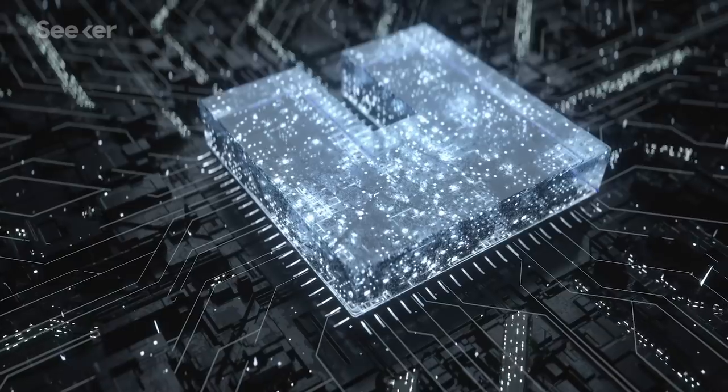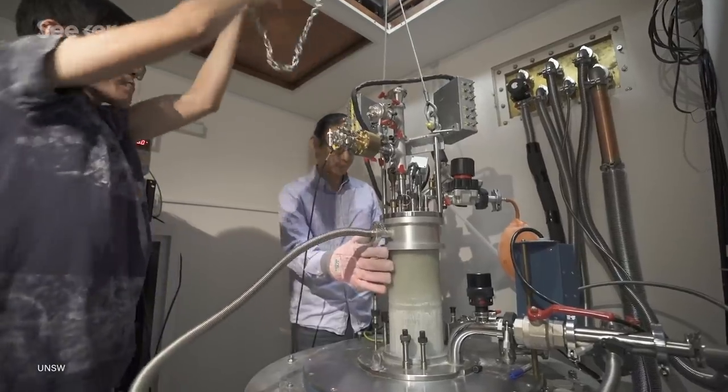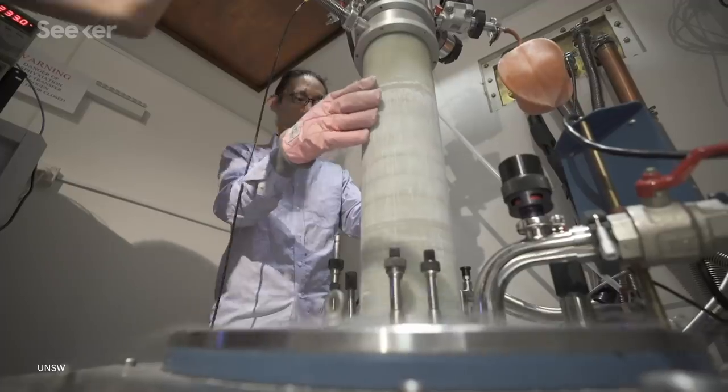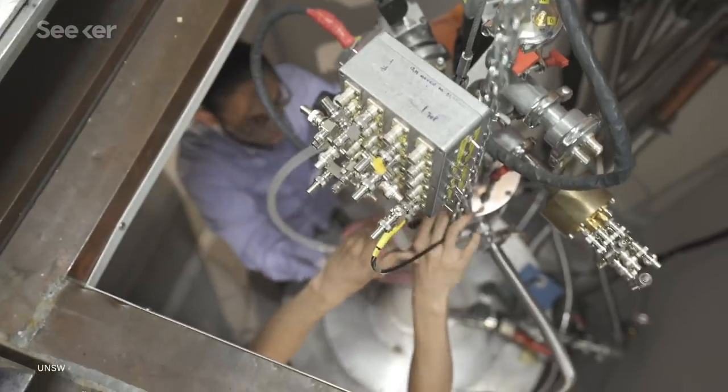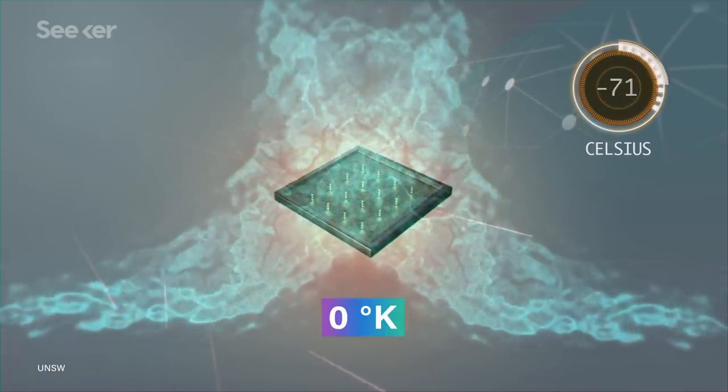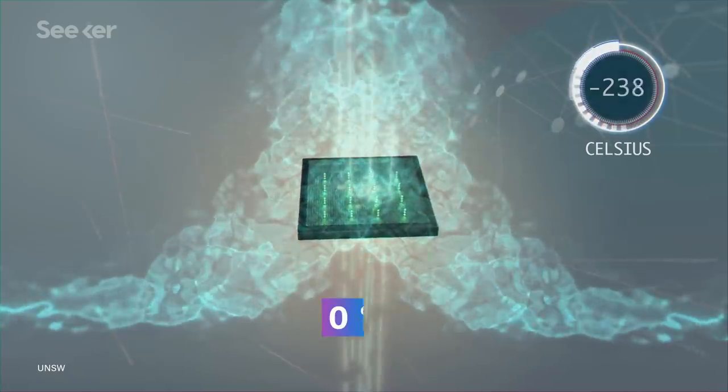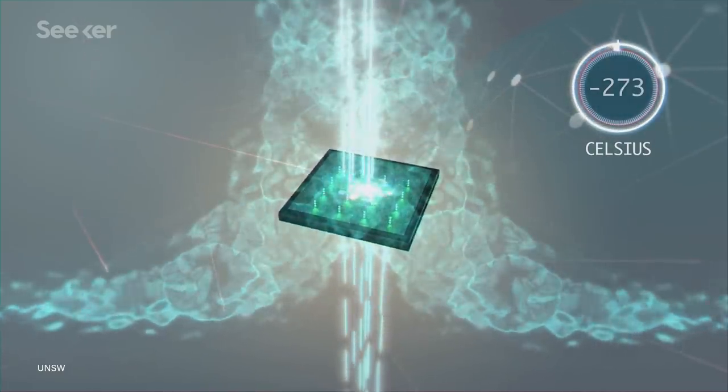Quantum computers are cool, and I mean that in a very literal sense. In order to make use of quantum phenomena and to avoid calculation errors, the most advanced versions need to be kept as near as possible to absolute zero, aka zero Kelvin, aka negative 273.15 degrees Celsius, aka the coldest temperature there is.